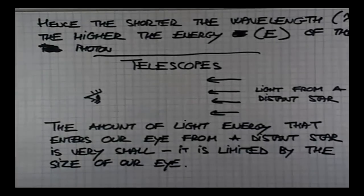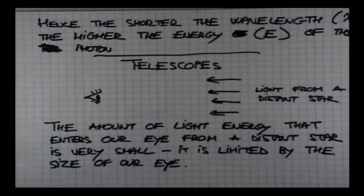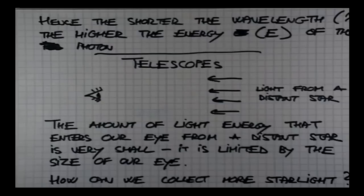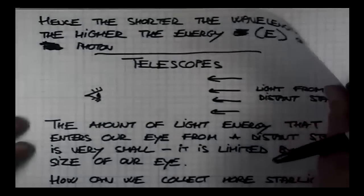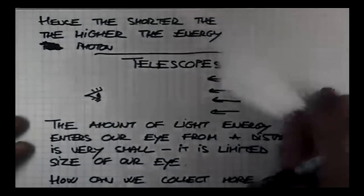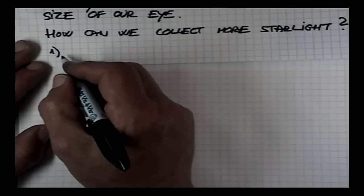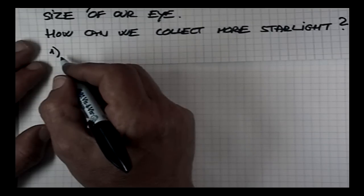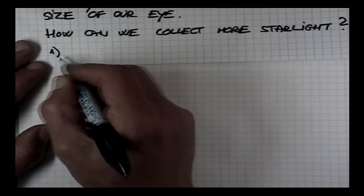The question is how can we perhaps gather more light, more starlight into our eye? There are basically two ways to do that. We can use refraction of light, bending as it passes from one medium to another, or we can use the reflection of light by mirrors.